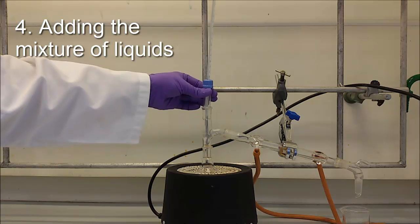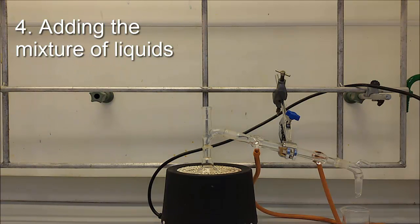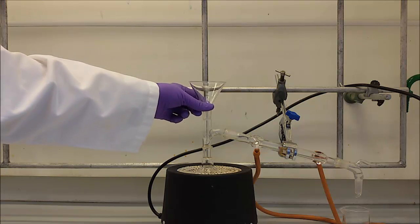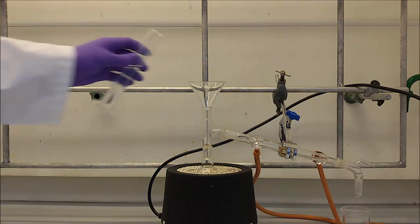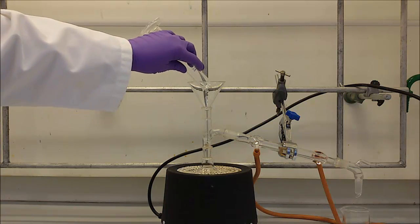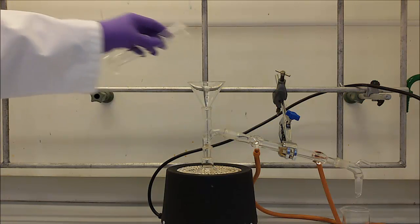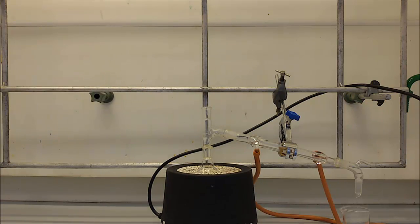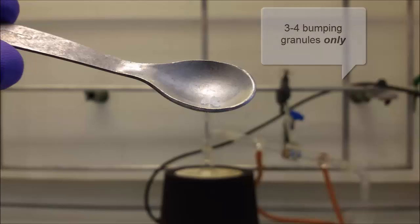Take off the still head and transfer the liquid to be distilled into the flask with the aid of a funnel. Put three to four anti-bumping granules into the flask.